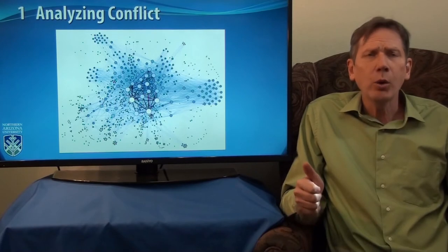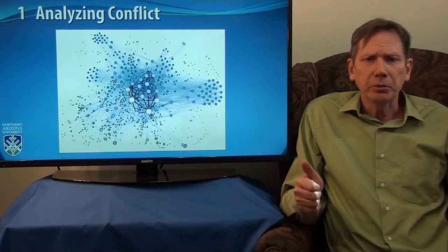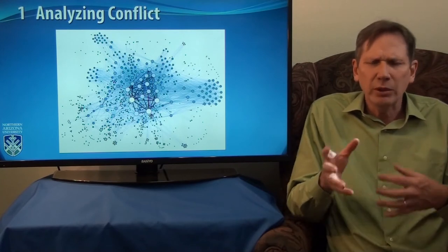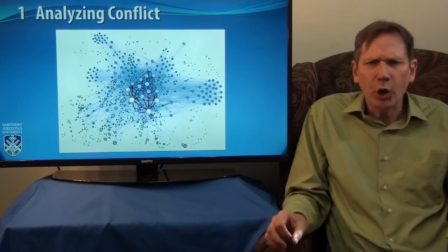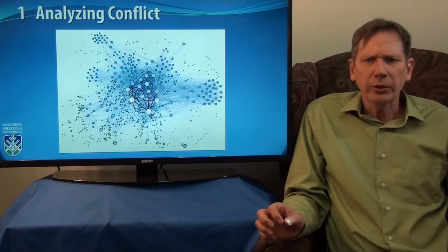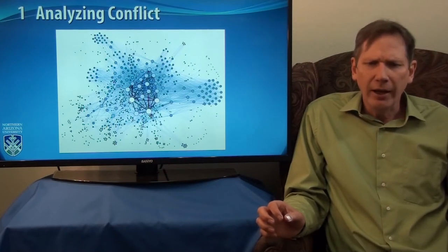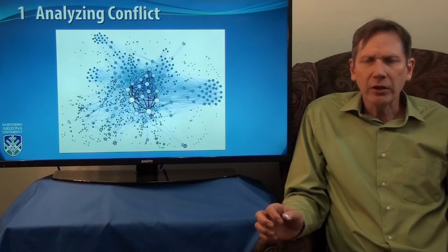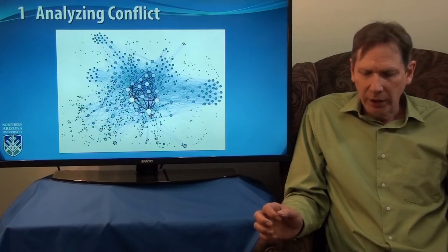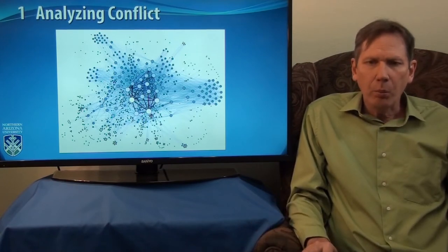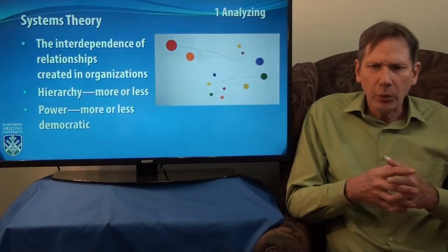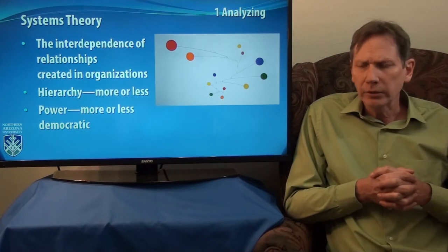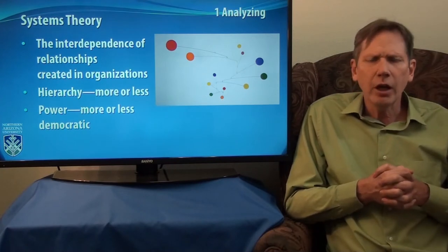We've already talked about how we have a typical default conflict style, defined what conflict is, talked about your power currencies. Some important ideas in these earlier chapters. But now let's start to set this in a context. Probably the easiest way to look at this is within the context of systems theory.